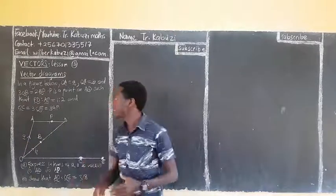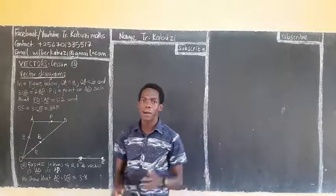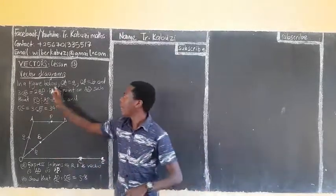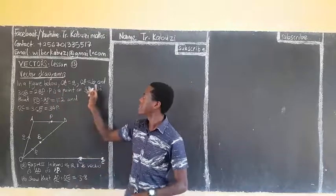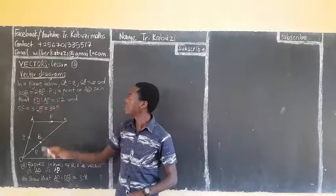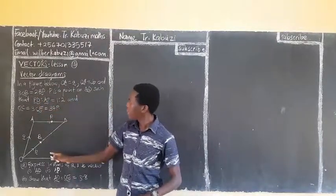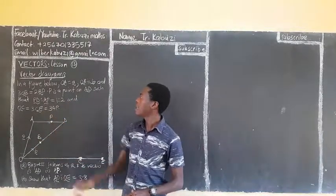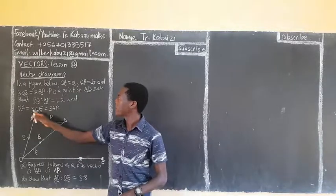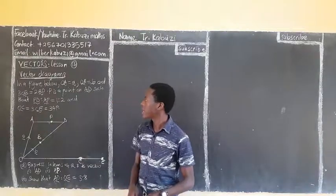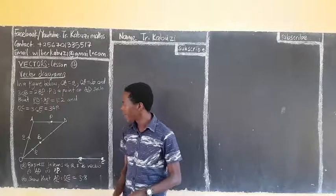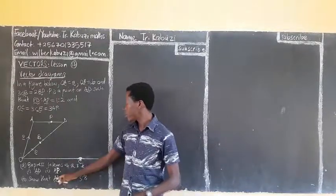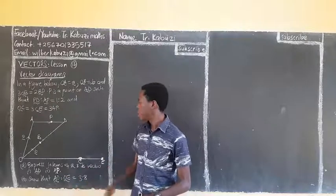Okay, so remember my class was still about these vectors. We are going to see this one now. In the figure below, OA is this, OB is this, and OB is this. P is a point on AB, so D is a point on AB such that PD to AP is 1 to 2. And OC is equal to that. Then, expressed in terms of A and B vectors, and show that AB to OE is 3 to 8.